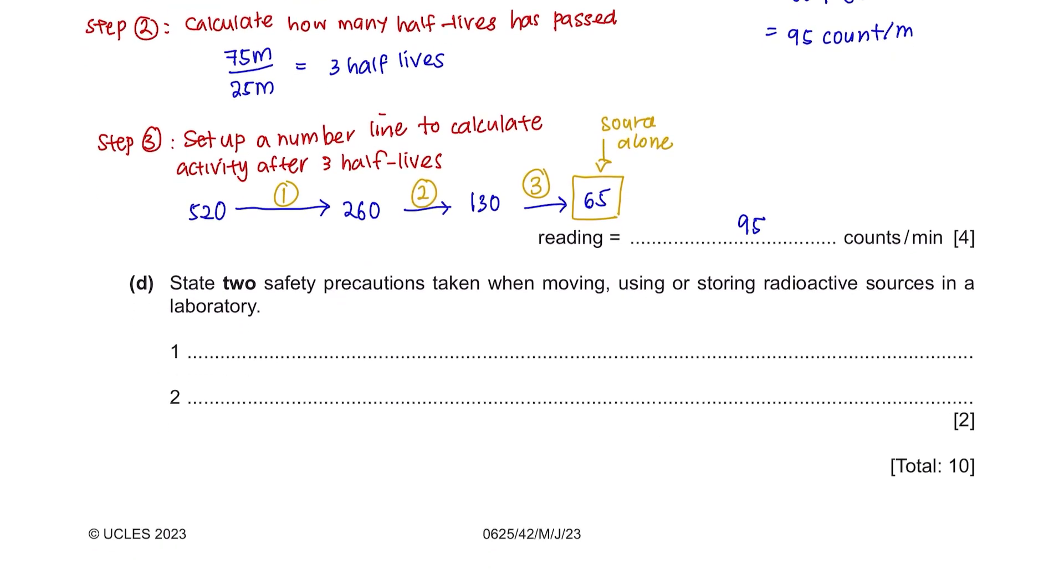But the detector will not only show you the radiation from the source, it will also include the background radiation. So the reading on the detector that you will see is 65 counts per minute from the source alone, together with 30 counts per minute which is the background radiation. The reading on your detector is 95 counts per minute. Next question D: State two safety precautions taken when moving, using or storing radioactive sources in a laboratory.